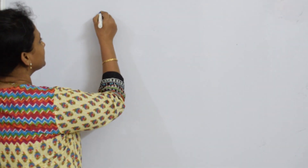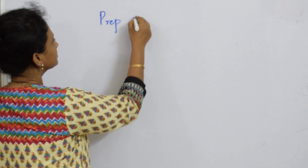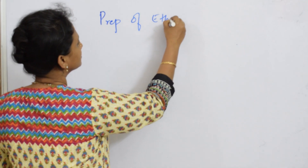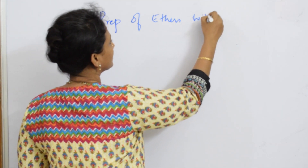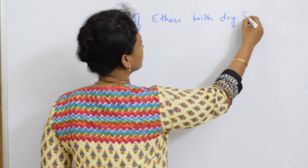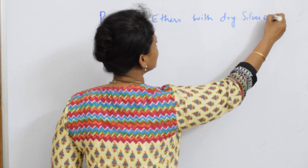We have already seen the preparation of ethers with dehydration of alcohols, then we also did Williamson ether synthesis with its variations. Now let us do the last preparation of ethers — preparation with dry silver oxide.